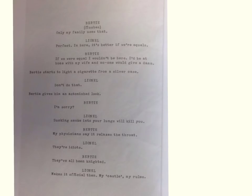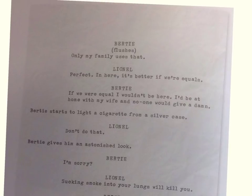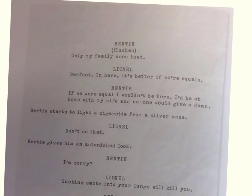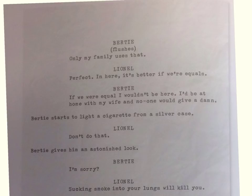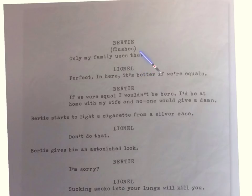On the next page, we've got the minimal stage directions again. We have 'flushes' - meaning he goes red and is embarrassed. Thinking about voice and character, David Seidler creates these characters so that Lionel is making Bertie uncomfortable with the level of informality he's not used to - and that is how Seidler has Lionel take control of this conversation.